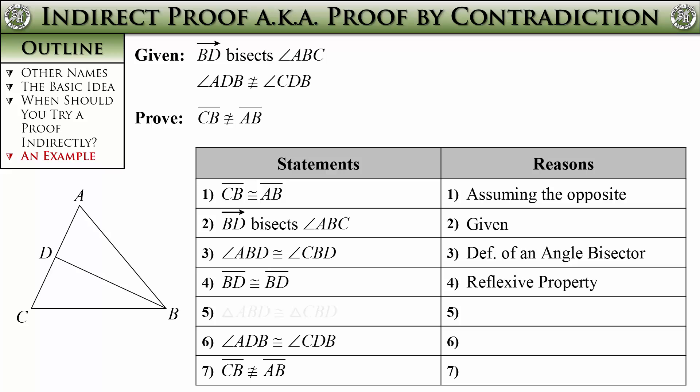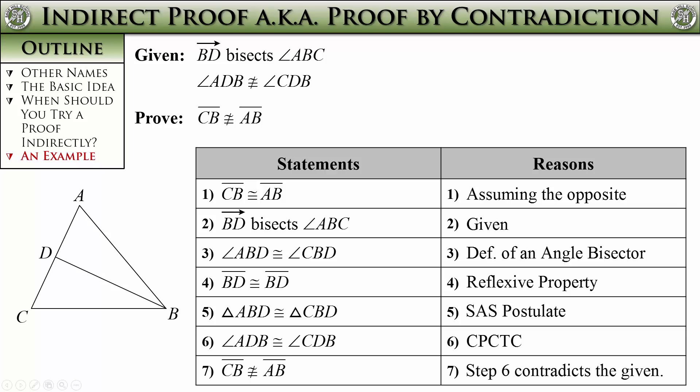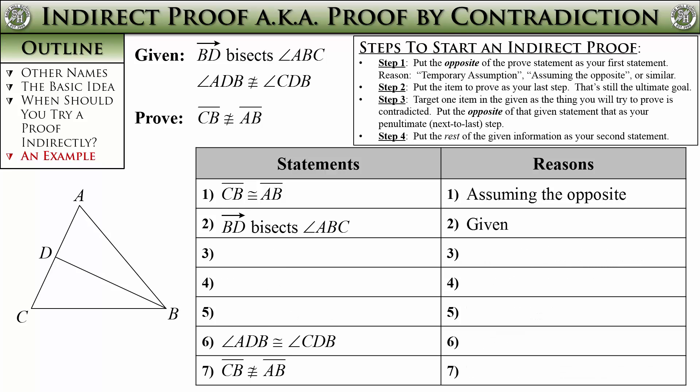Now we have enough information to prove triangle ABD is congruent to triangle CBD by the SAS postulate. Those angles are corresponding parts of congruent triangles, so CPCTC allows us to say they are congruent. At this point we have just proven something in the given is untrue — we have both that angle ADB is congruent to angle CDB, and that angle ADB is not congruent to angle CDB. We have our contradiction, our absurdity. Angle ADB cannot simultaneously be both congruent and not congruent to angle CDB. So for our final step, the reason should also state that therefore our assumption in step 1 must have been incorrect.